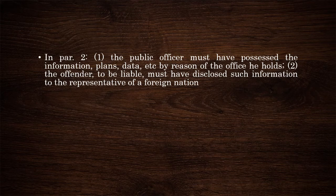Please remember that in paragraph 2, the public officer must have possessed the information, plans, data, etc. relative to the defense of the Philippines by reason of the office he holds. And number two, the offender or public officer to be liable must have disclosed such information to the representative of a foreign nation. These two requisites must concur, because even if the public officer has in his possession information, plans, data relative to the national defense, but did not disclose the same to the representative of a foreign nation, he will not be held liable for espionage. The representative here refers to the official representative of a foreign nation, not just any foreigner or even a public officer of that foreign nation. An example of an official representative of a foreign nation is the ambassador.